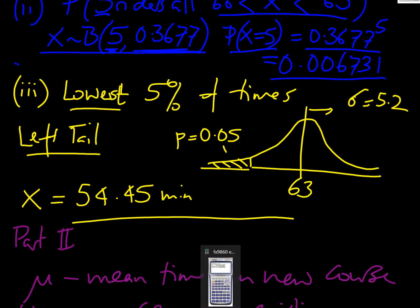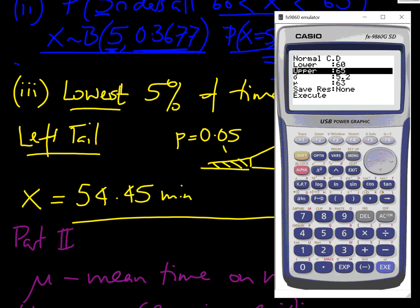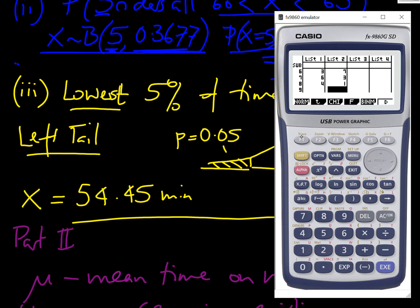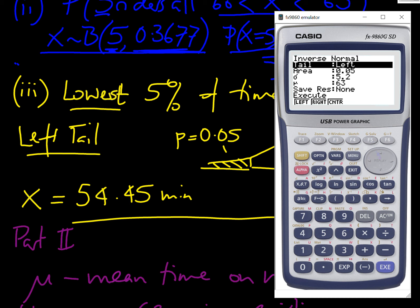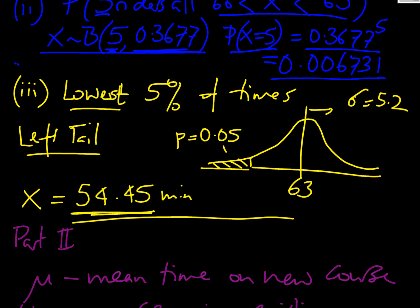We get our calculator out, and this time we're going to use our inverse normal distribution. Inverse normal, we're interested in the left-hand end here for the extreme. We want an area of 0.05. We've got a standard deviation of 5.2 and the mean of 63. Press the execute button, and we get the answer of 54.45 to four decimal places. Always worth doing that.